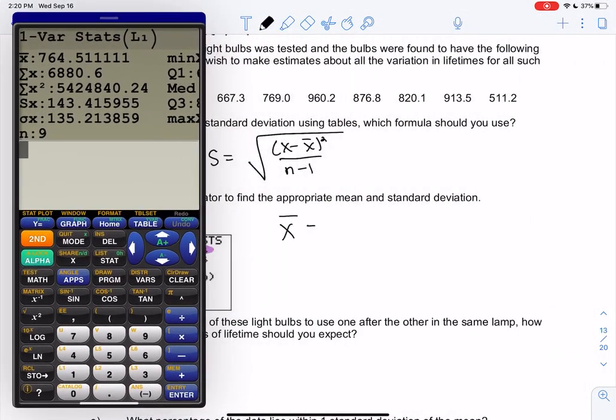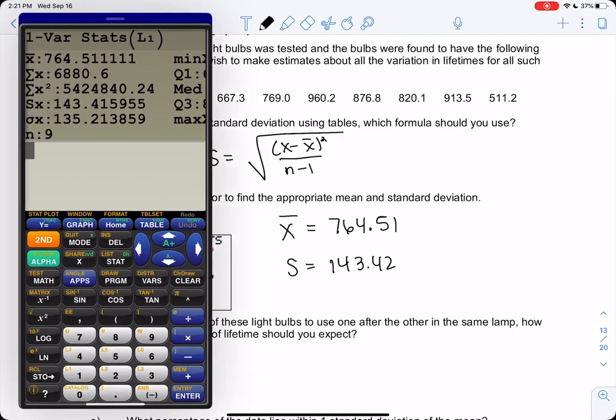So I get a mean of 764.51. I usually like to do one more decimal place than the data, so the data had one, now I have two. And then s, not sigma, would be the 143.42. That's if we did that by hand, we'd do all those crazy tables, but let's save some time and do one on the calculator.